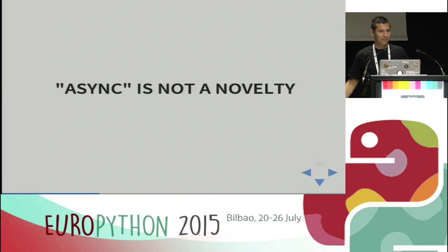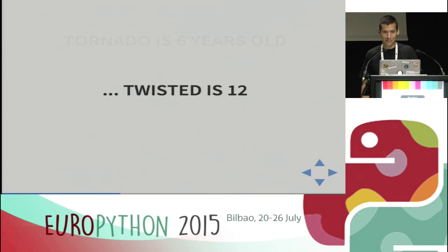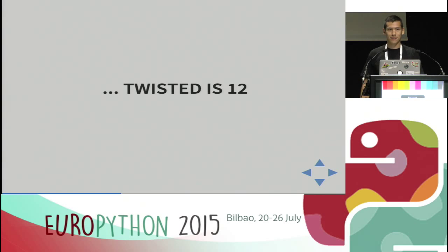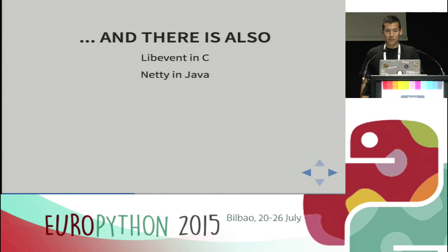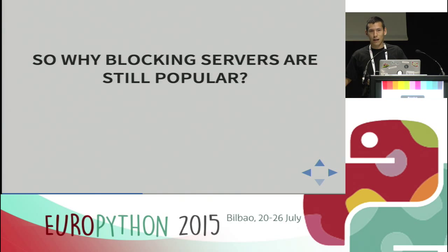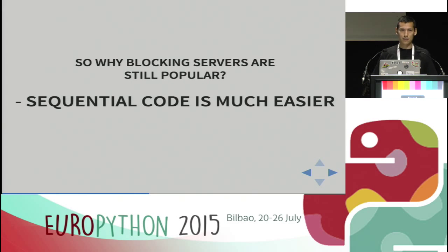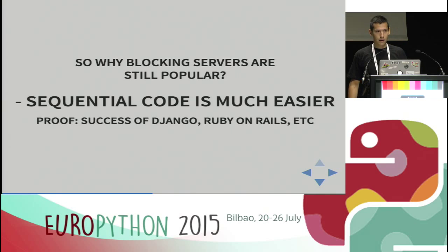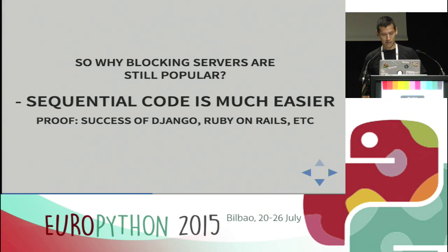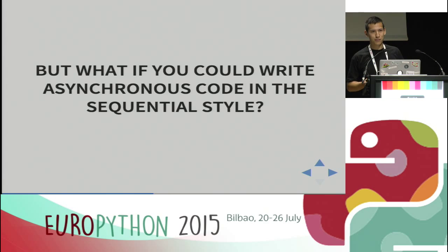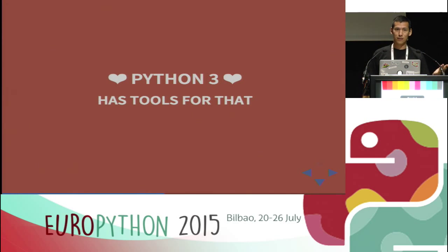Async is not something new — Tornado is about six years old, and there's also Twisted. But we still use blocking servers because sequential code is obviously way easier to read, easier to test, easier to maintain and extend. We've seen how Django and Ruby on Rails were successful just because of simplicity. So why can't we have asynchronous code that's structured and readable just like synchronous code, without the callback hell? Python 3 lets us do that.